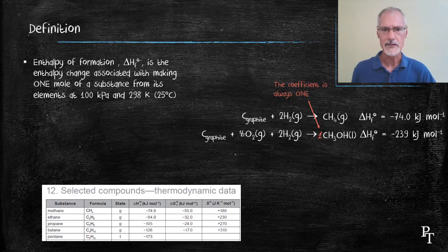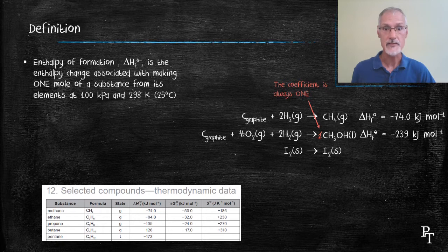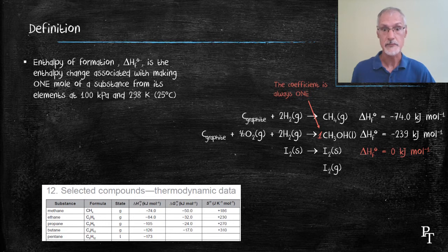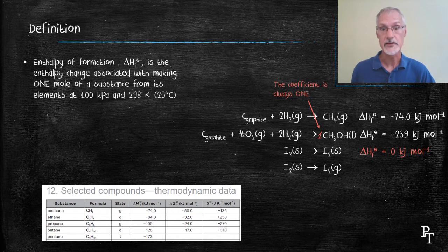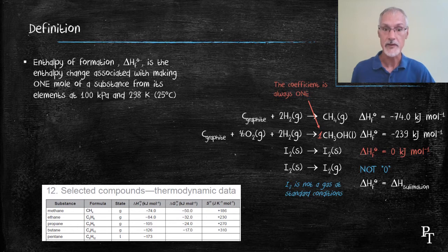What about to make iodine solid? What would be the enthalpy associated with it? Well, iodine exists as a solid at room temperature and pressure, so as a result we would expect the formation of any element that's at room temperature and pressure to be zero. However, if we do want to make an element that isn't at its standard conditions, so for instance iodine gas, it wouldn't have an enthalpy of zero.